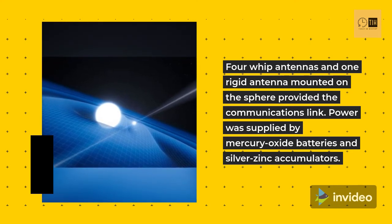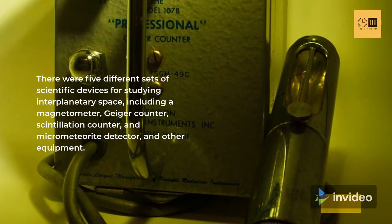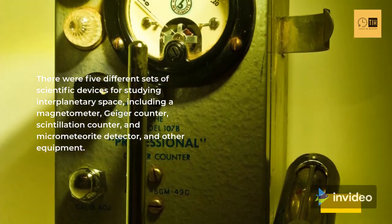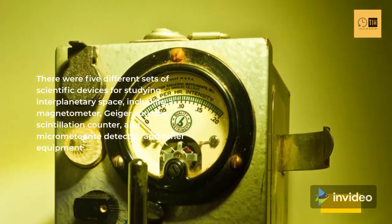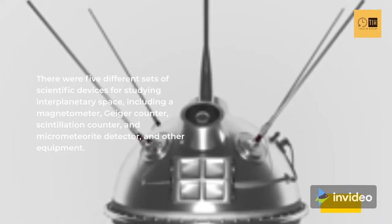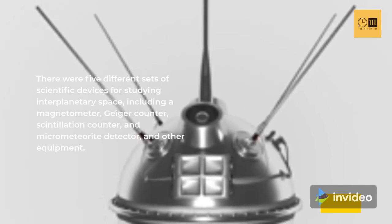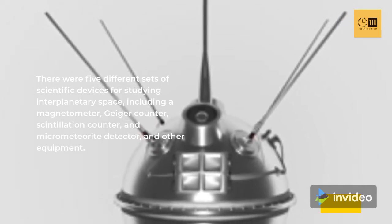Power was supplied by mercury oxide batteries and silver zinc accumulators. There were five different sets of scientific devices for studying interplanetary space, including a magnetometer, Geiger counter, scintillation counter, micrometeorite detector, and other equipment.